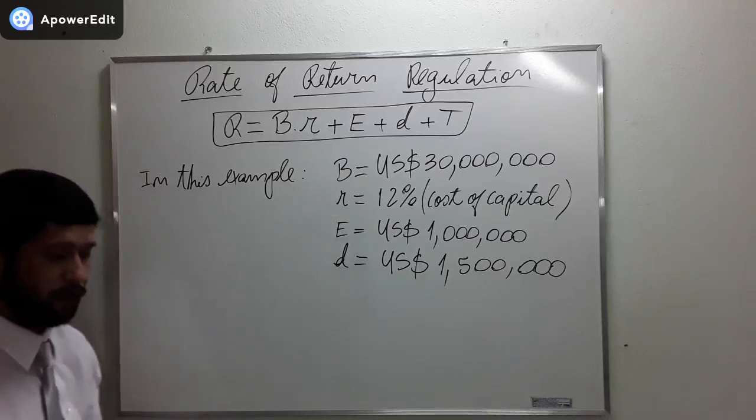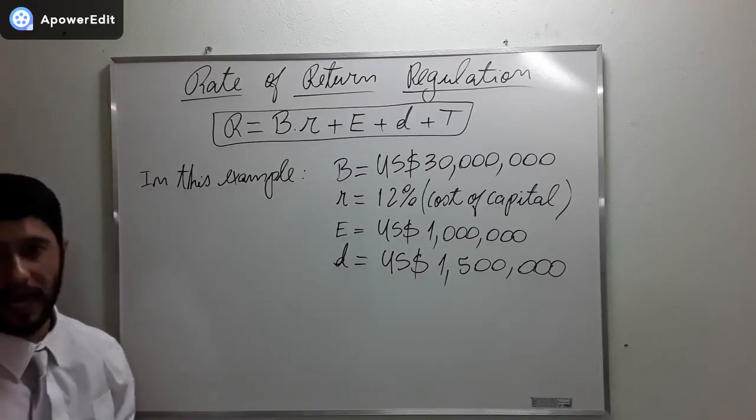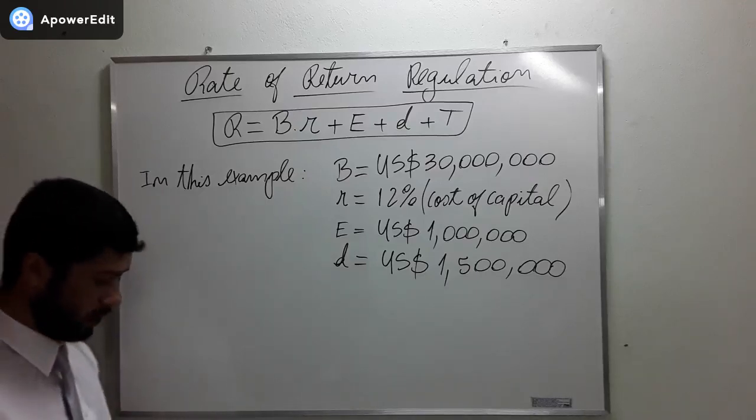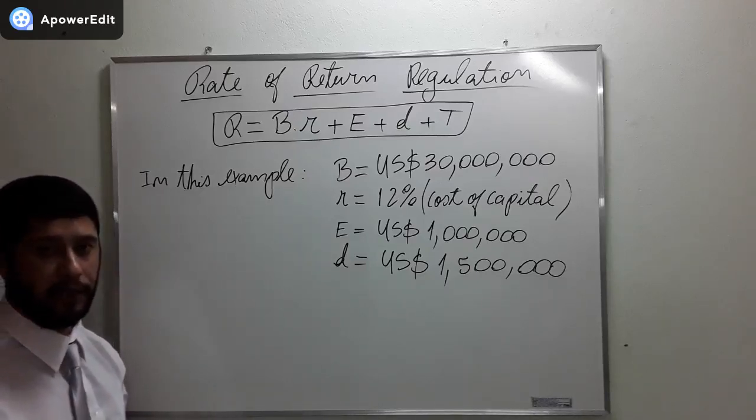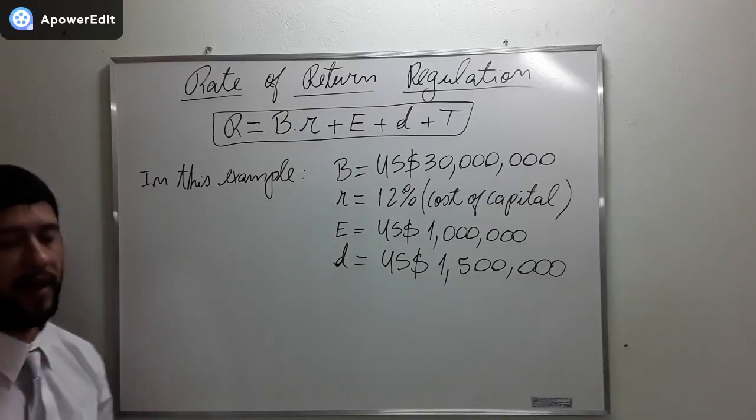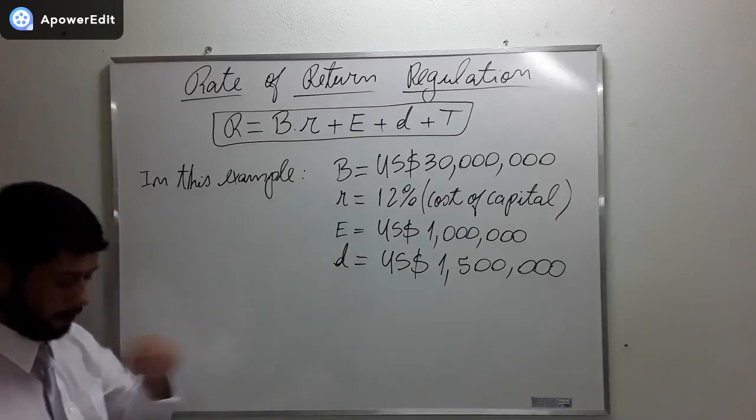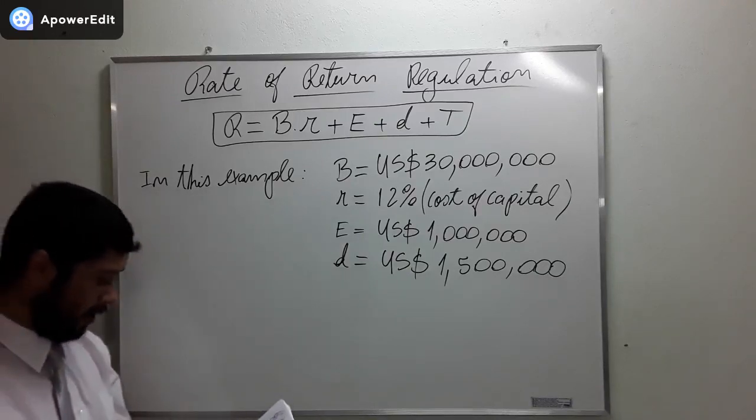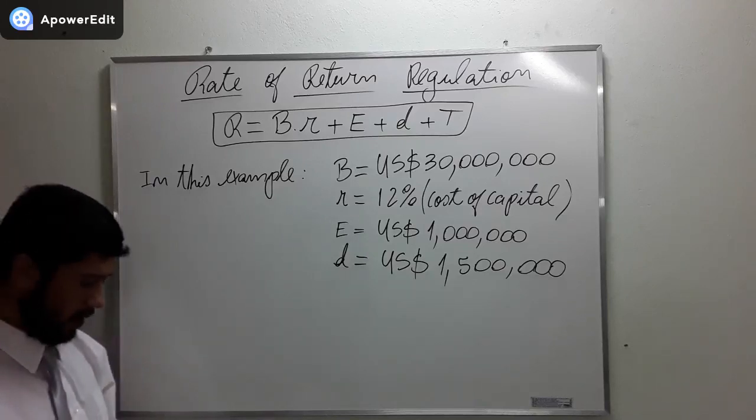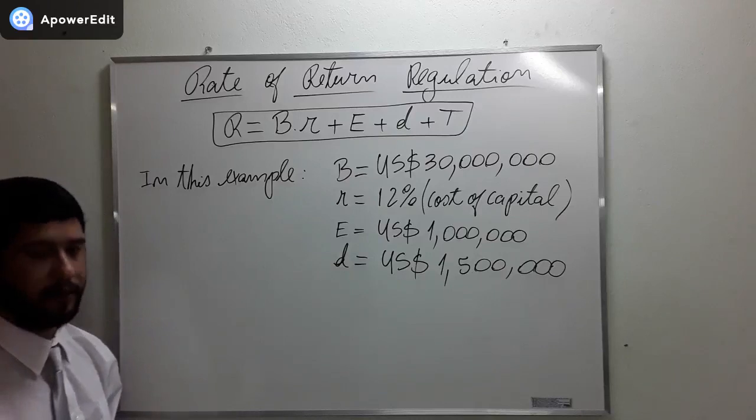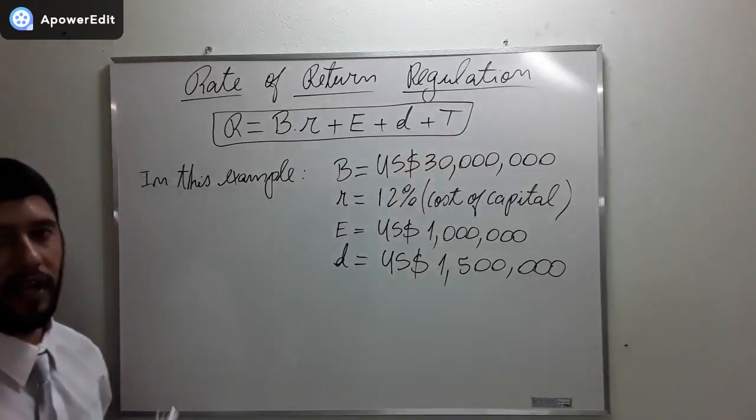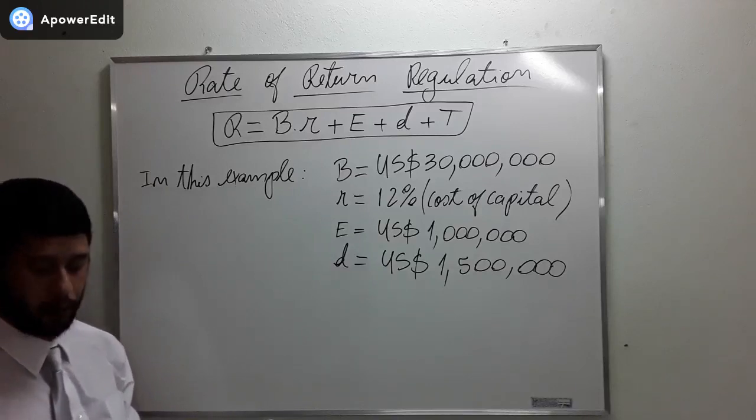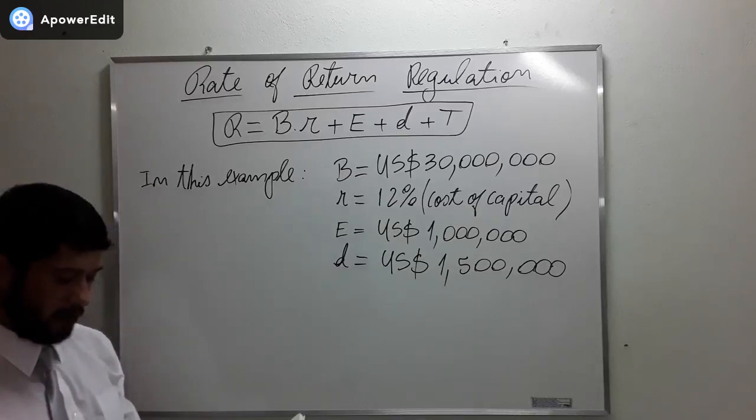And r is the cost of capital, the cost the utility incurs to finance its rate base, including debt and equity. E is operating expenses, which are the costs related to supplies, labor, and resale of assets. D is the annual depreciation expense, which is the annual accounting charge for wear, tear, and obsolescence of plant. And T is the income tax, defined as all taxes not counted as operating expenses and not directly charged to consumers.